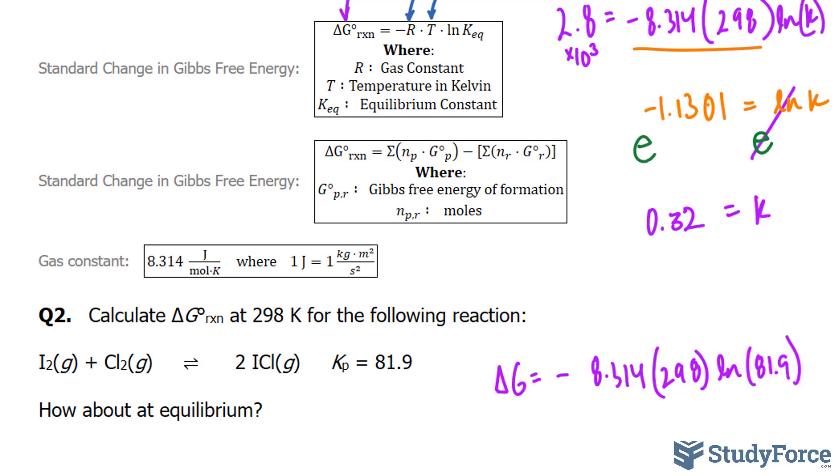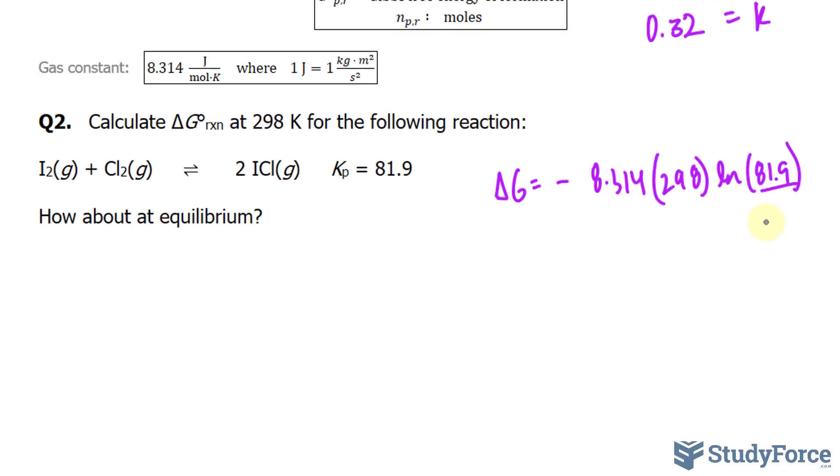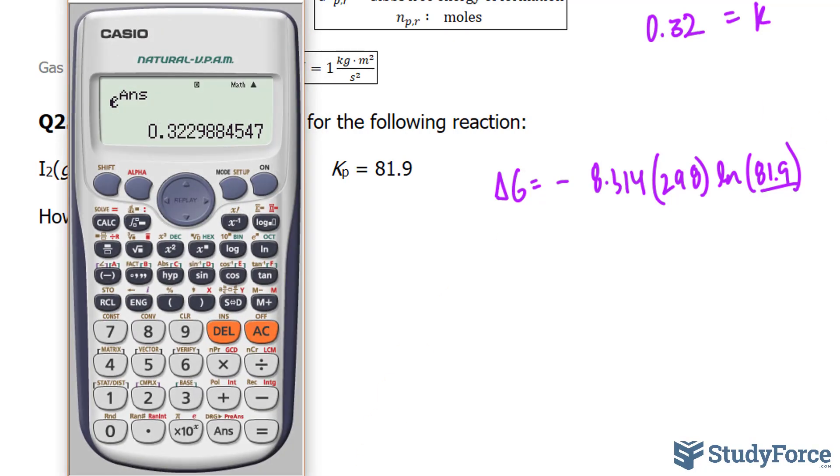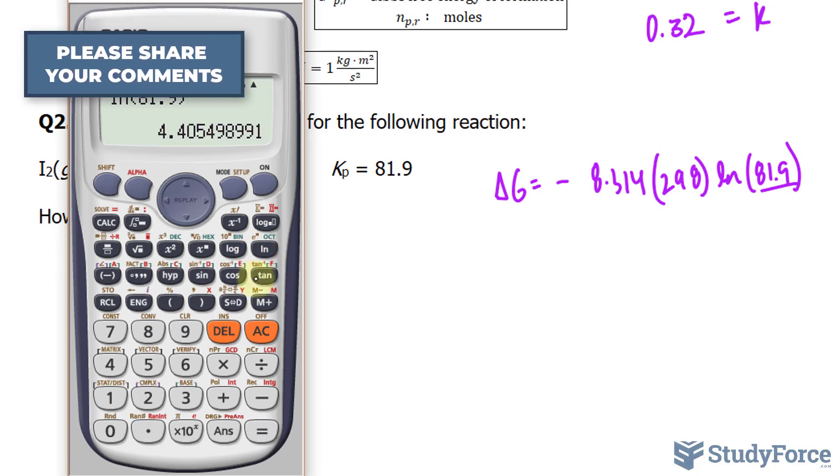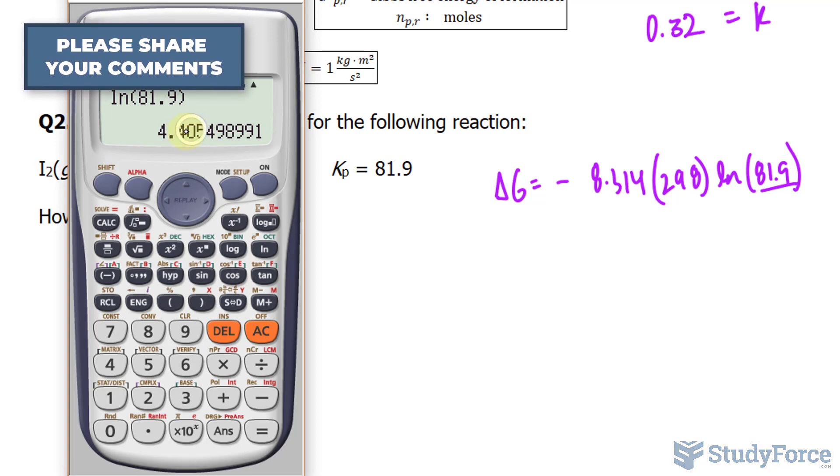This number has three significant figures, so we should have three significant figures after the decimal place after calculating this. So ln of 81.9 gives us this really long number, but only these three are significant. Keep that in mind.